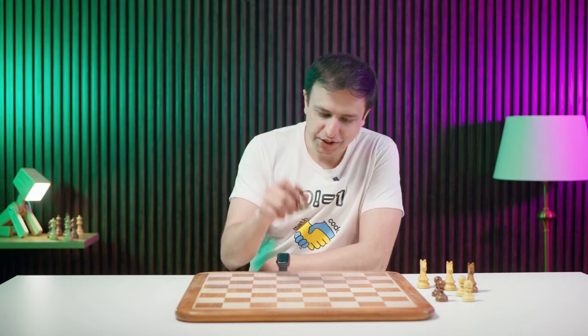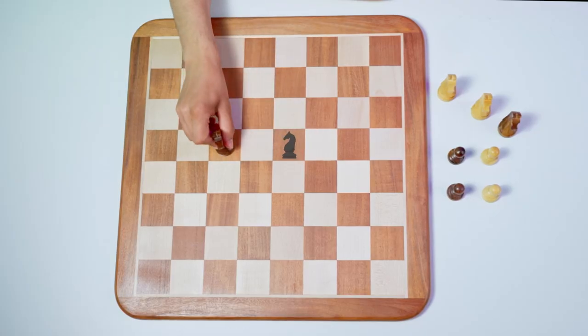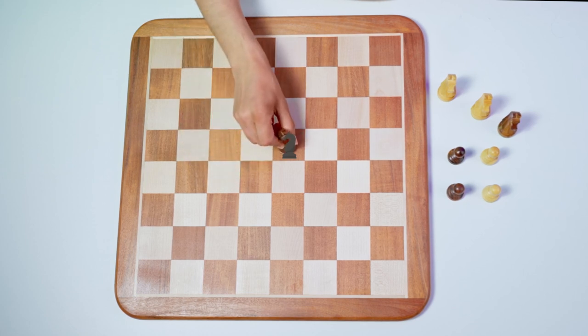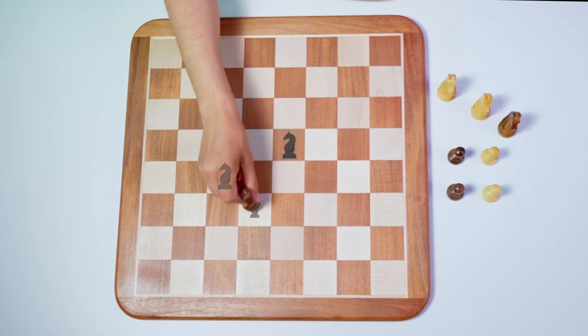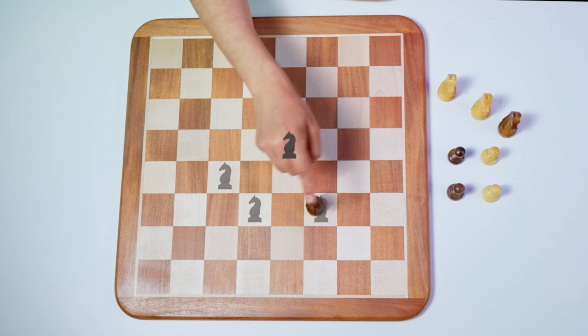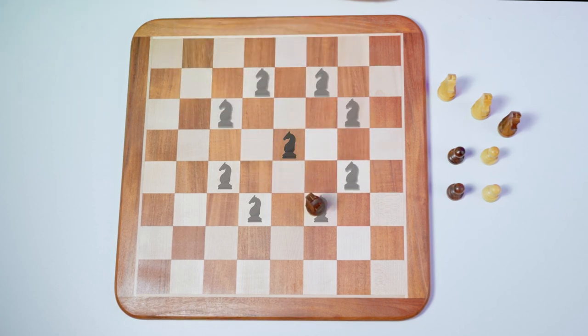Here's how a knight moves on a chessboard. Two steps in one direction and one step in the perpendicular direction. So from this position, it can go here or here or here or any of these eight possible positions.